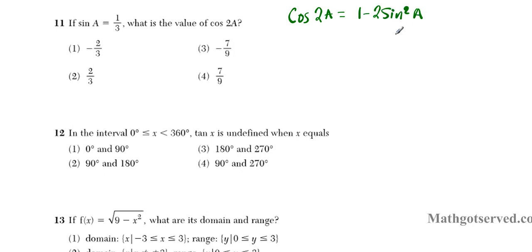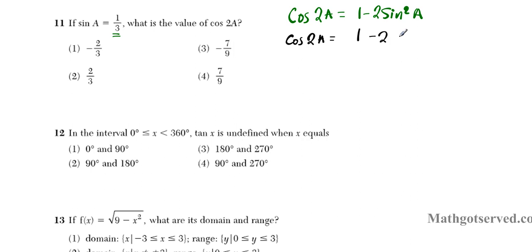The one that's dependent on only sine is the 1 minus 2 sine squared a variation. You have to be selective when using the double angle identities for cosine — you don't want to do more work than is necessary. Since you have only sine, we're using the formula that has only sine. So cosine 2a is going to be 1 minus 2 times (1/3) squared.